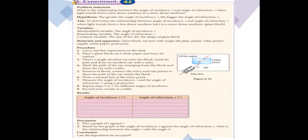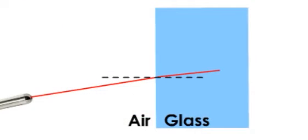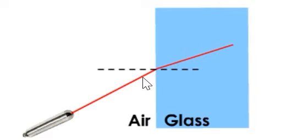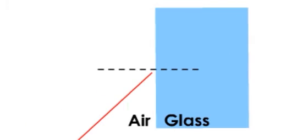Next, let's carry out an activity to investigate the relationship between angle of incidence, I, and angle of refraction, R, when light travels from a less dense medium, air, to a more dense medium, a glass block. The angle of incidence and angle of refraction are measured at incidence angles of 10°, 30°, 50°, and 70°.